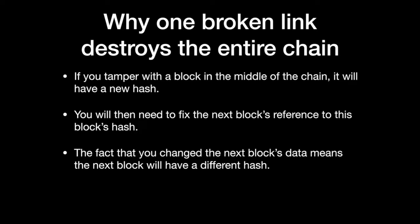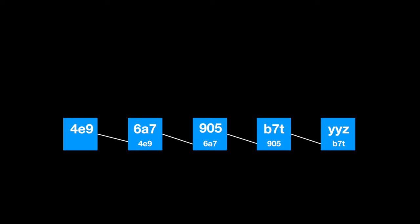However, the fact that you changed block A's hash code reference in block B means the hash code of block B will no longer be the same. This means that block C, which follows block B, will no longer have the correct reference to block B. Now you must also change block B's hash code reference in block C. Let me show you this visually.